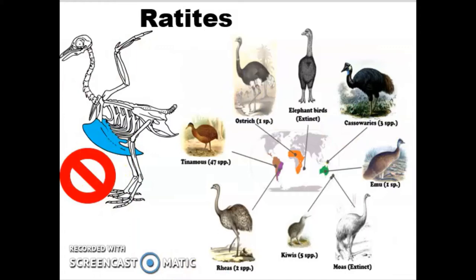That's going to include the ostrich, the emu, and the rhea that we're going to look at. It would also include things like kiwis and cassowaries.